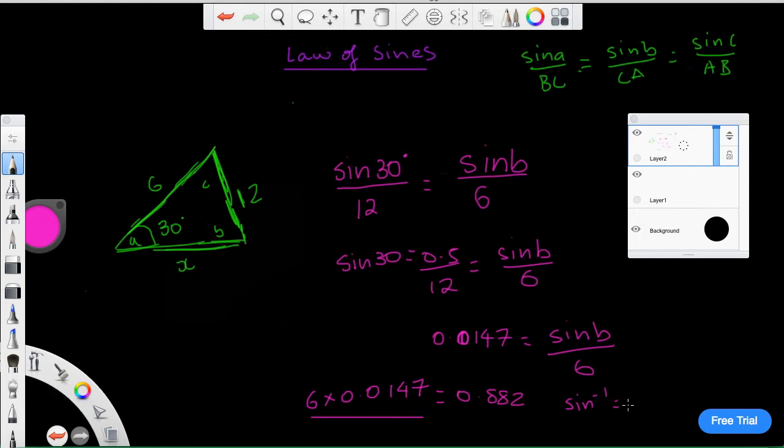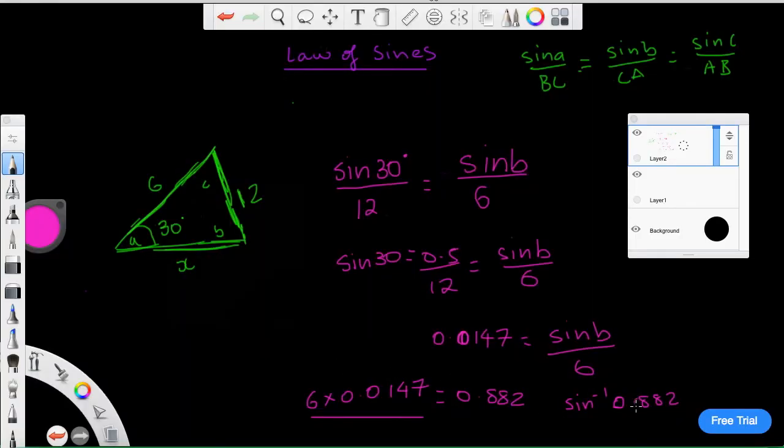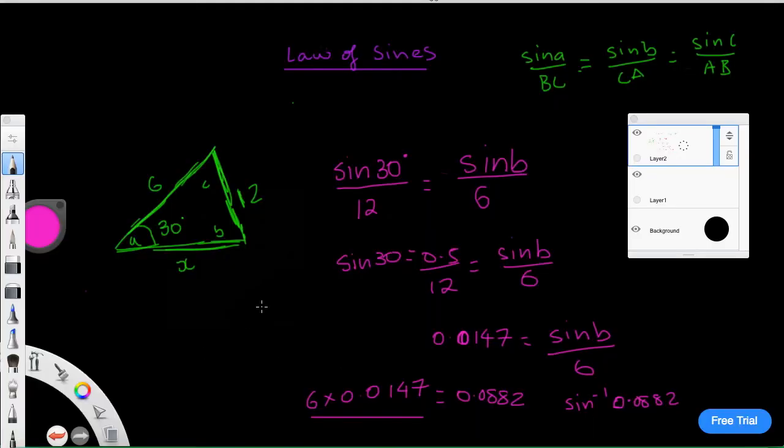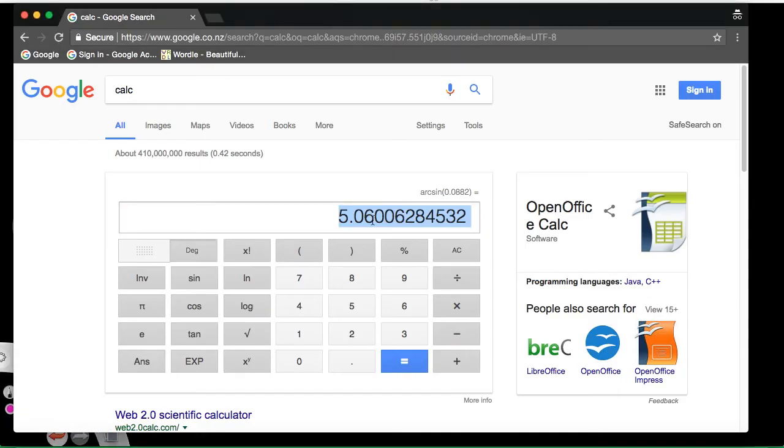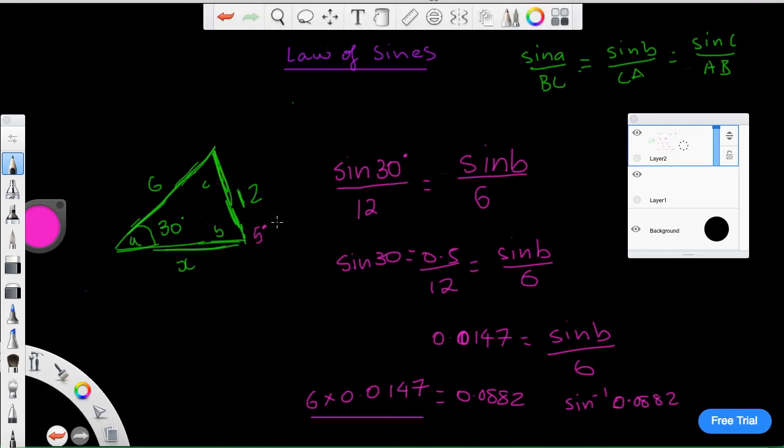We'll be sine negative 1 equals 882. So we'll go inverse sine, or arc sine, 0.082. That comes to this. Of course, my angles are completely right, but if we had these ratios, this angle over here, angle B, would have to be 5 degrees.